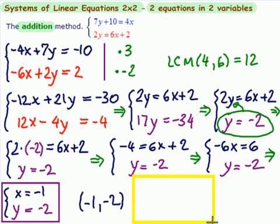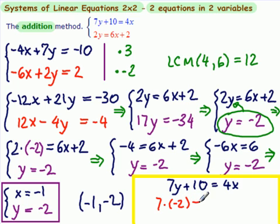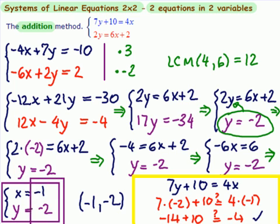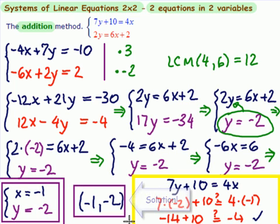Let's check it in the other equation. So, which equation did we use? We used the bottom one, so let's use the top one now. 7y plus 10 equals 4x. So, we substitute minus 2 for y. So, 7 times minus 2 plus 10. We're asking whether that is 4 times minus 1. So, we have minus 14 here plus 10. And we want to know whether that's equal to minus 4. And we can see that it is. So, we're done. And this is our solution in written form and our solution in ordered pair form.